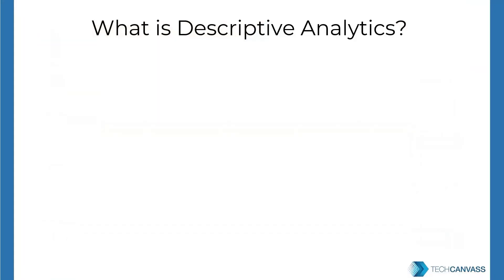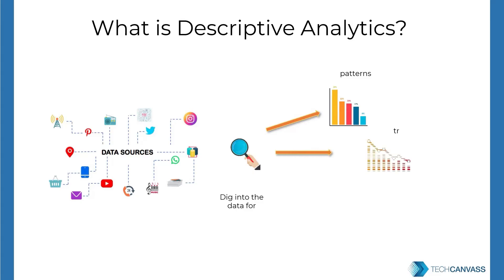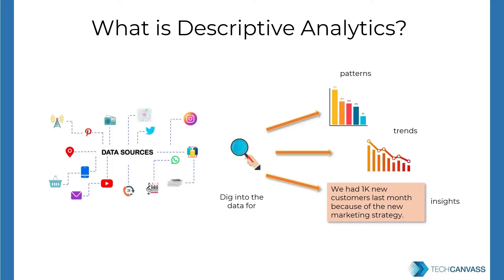An organization's analytics journey typically starts with descriptive analytics. We dig deep into vast amounts of historical and current data, convert them into simple to understand visuals or tables, highlight patterns and trends, and derive insights valuable for the business. The output of descriptive analytics is either reports or visualizations. Reports help track the key performance indicators in an organization's financial statements, and this is prepared using descriptive statistics.